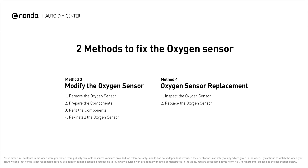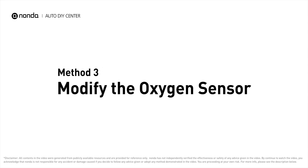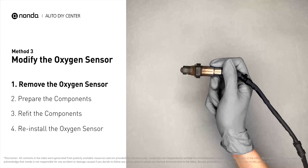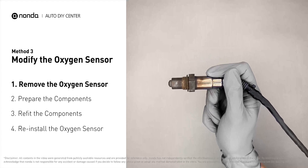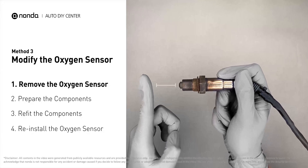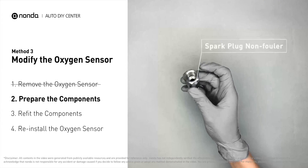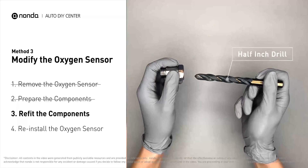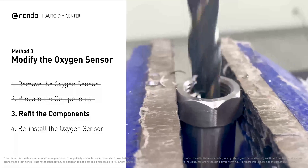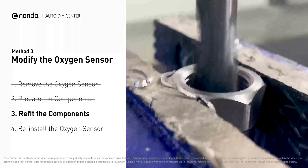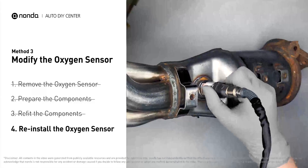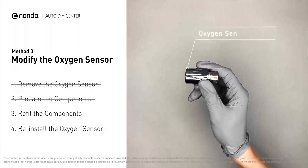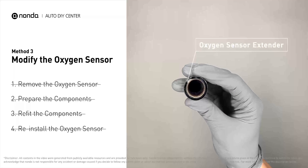Here are two methods to fix the oxygen sensor. Method 3: Modify the oxygen sensor. You can remove the oxygen sensor from the converter and fix it by putting some extra space between the sensor and the converter. Get a spark plug non-fouler and use a half-inch drill to refit it. The non-fouler now has enough space to fit into the oxygen sensor. Put them together and put them back on the catalytic converter. If refitting is too complicated, you can also use an oxygen sensor extender or oxygen sensor socket to create that space.